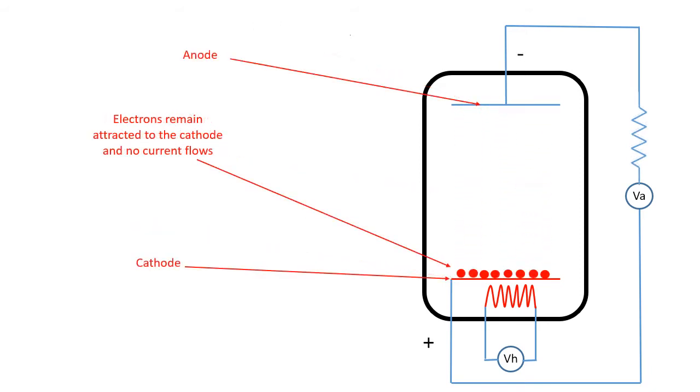However, if the voltage applied to the anode and cathode is reversed so that the anode is connected to negative and the cathode is positive, then the electrons will be attracted back to the cathode and no current flows through the valve. Such a valve is called a diode.